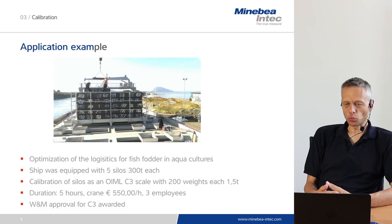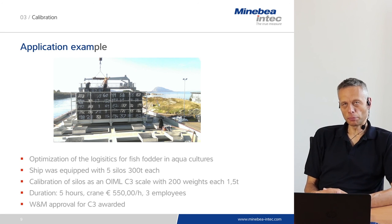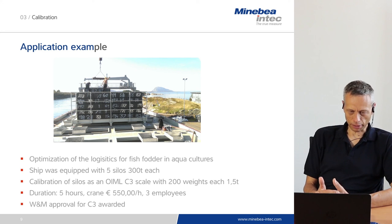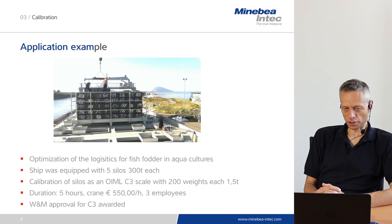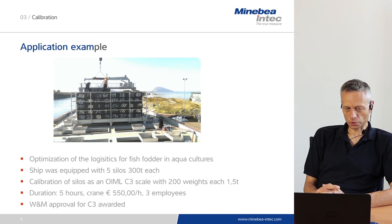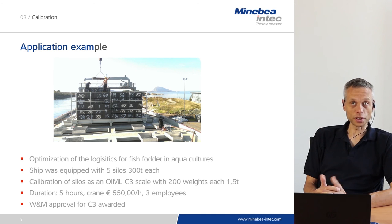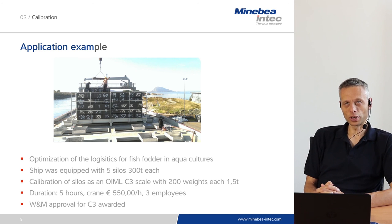This meant there was a requirement for a legal-for-trade scale with class C3 load cells, making calibration with weights absolutely mandatory. Two hundred weights with a capacity of 1.5 tons each were loaded step by step onto each silo using a crane and manpower. The duration per silo calibration was five hours. A crane was used at a cost of 550 euro per hour, plus three employees. Finally, the accuracy of the system was so good that the weights and measures approval for a class C3 scale was awarded, showing that this accuracy can be achieved — but the amount of work and material required is quite high.